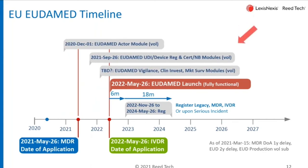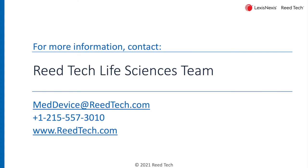Prior to that, we are already seeing a couple of modules released as early production versions where you can make voluntary submissions. In December of last year, the economic operator module was opened up. I did a check this morning and it looks like 1,119 manufacturers have already been registering there and moving forward with SRN assignment. The other module — the device module, which is the one we're concerned about today — along with certified notified bodies, is now scheduled for September of this year. We're waiting for the actual schedule for the last three modules. So keep that in mind as you make plans.